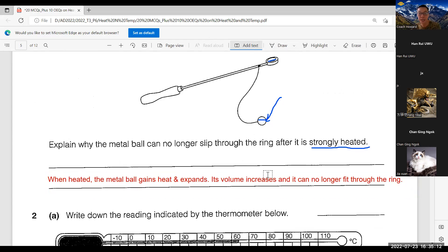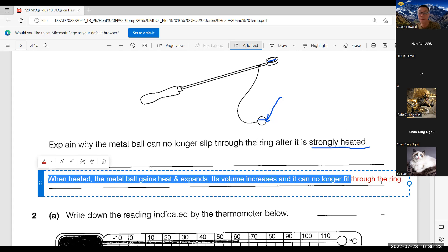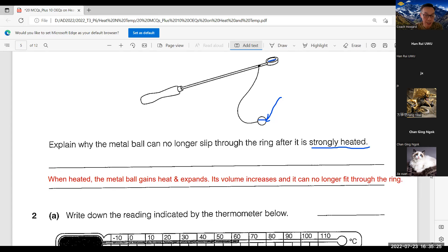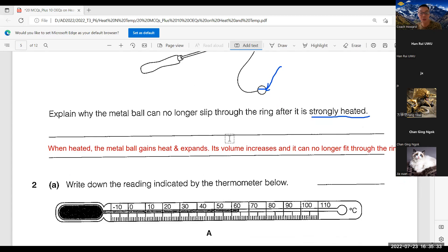Its volume increases, it can no longer fit through the ring. You must talk about gain heat and expand. Its volume increases and it can no longer go through the ring. Or you can say if diameter increases, it can no longer go through the ring.